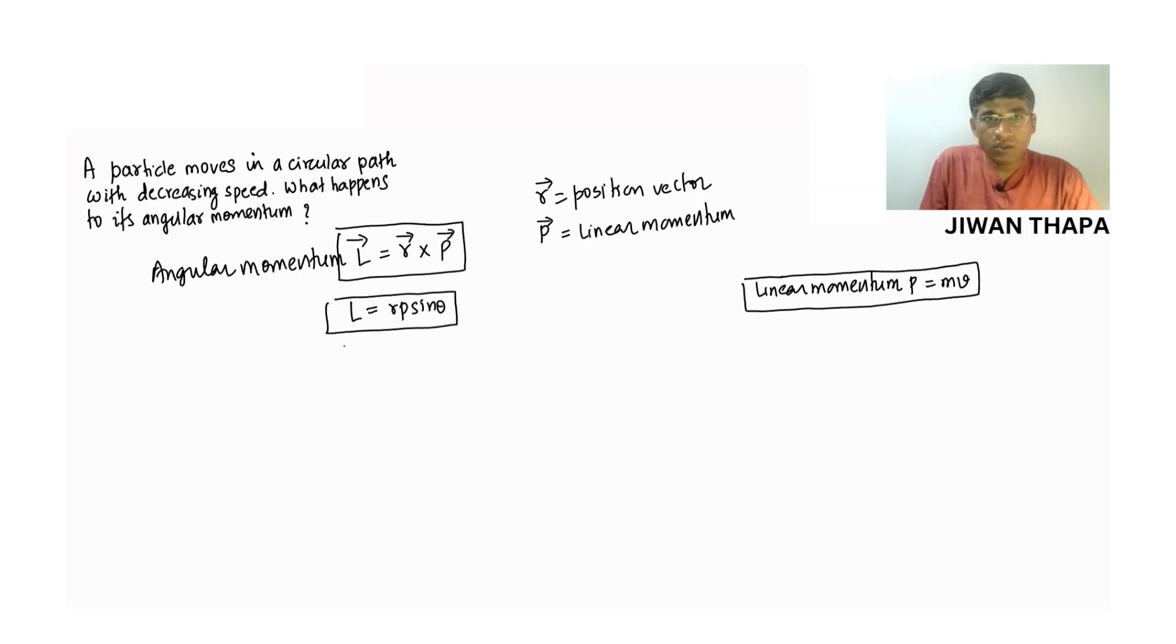So, if theta equals 90 degrees, then from this expression, we get angular momentum L equals R times P because sine 90 is 1. Now, on putting the value of P, we can write angular momentum L equals R times P is MV. So, L equals MVR. This is the magnitude.